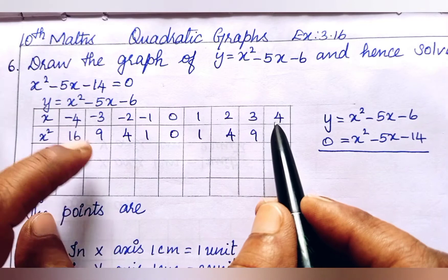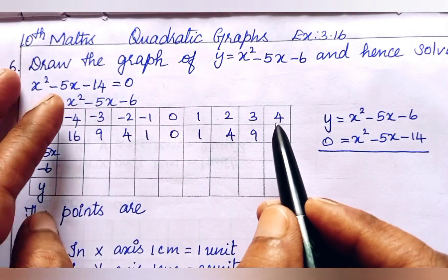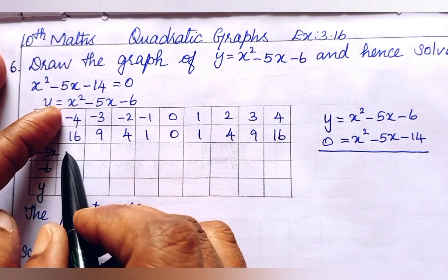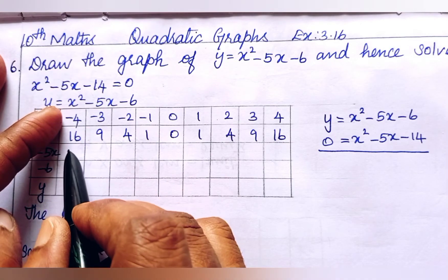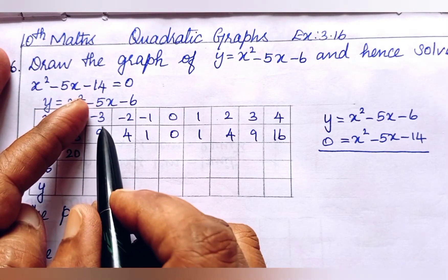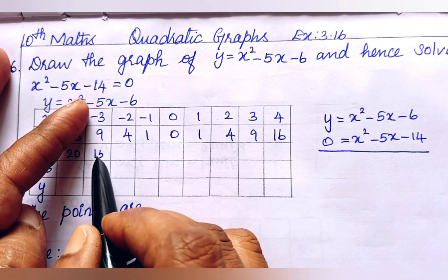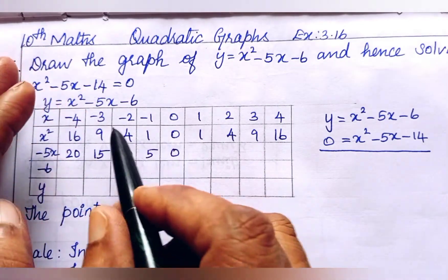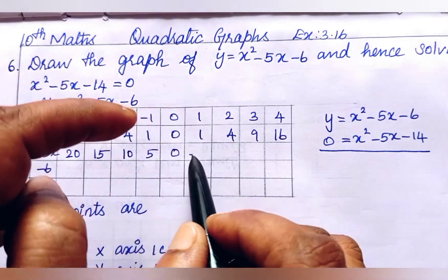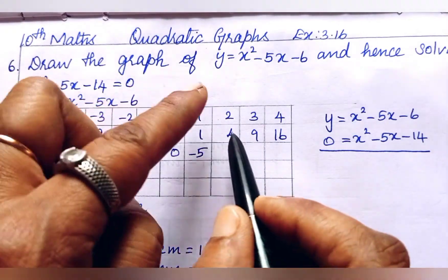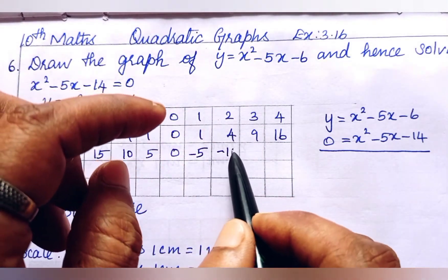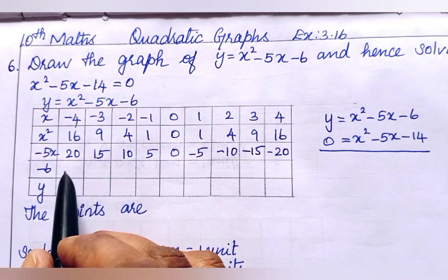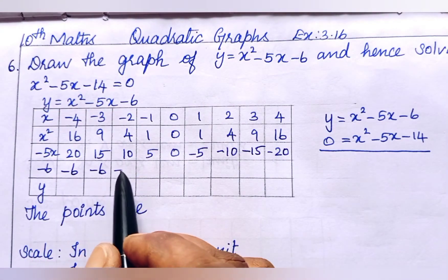For the minus 5x row, we multiply minus 5 by each corresponding x value and fill it in. Minus 5 times minus 4 is plus 20, minus 5 times minus 3 is plus 15, then 10, 5, 0, minus 5, minus 10, minus 15, and minus 20.